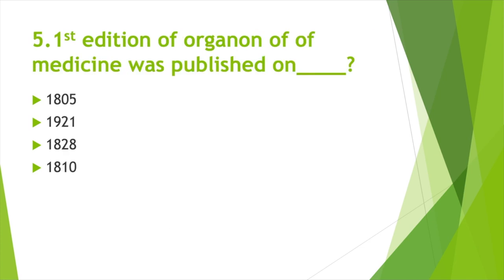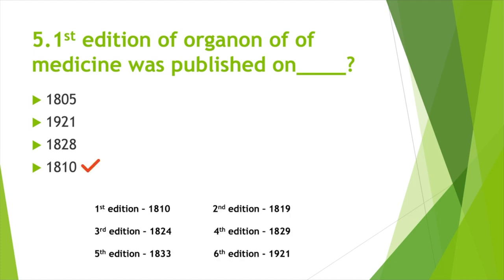The first edition of the Organon of Medicine was published in — Option A: 1805, Option B: 1921, Option C: 1828, Option D: 1810. Answer: Option D, 1810. First edition: 1810; second edition: 1819; third edition: 1824; fourth edition: 1829; fifth edition: 1833; sixth edition: 1921.